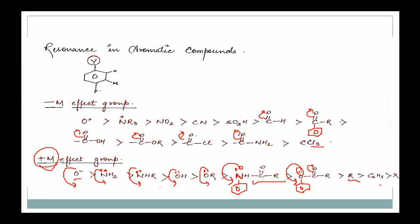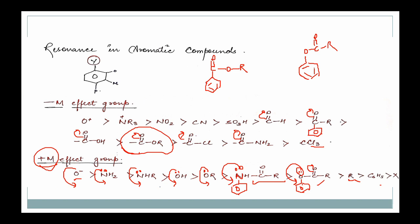So when you have halogens, don't try to apply plus M or minus M — always consider the inductive effect: the plus I effect and the minus I effect. Now I want to take a comparison. If I have a benzene ring with a C=O–O–R group (an ester group), versus a benzene ring with an O–C=O–R group. Let me analyze these. In the first case: which is the directly attached atom? It is a carbon with a C=O double bond — so oxygen withdraws electron density.